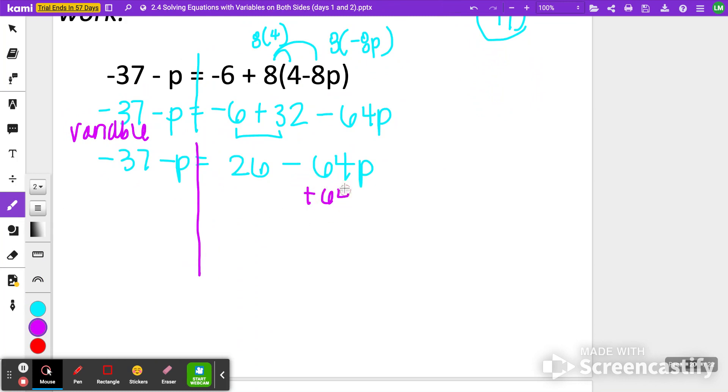I'm going to add 64p to the negative p, 64. Again, if it helps, put a 1 in front of there. So it's technically negative 1 plus 64 is a 63p. I still have negative 37. This 63 now is a positive and then is equal to 26.